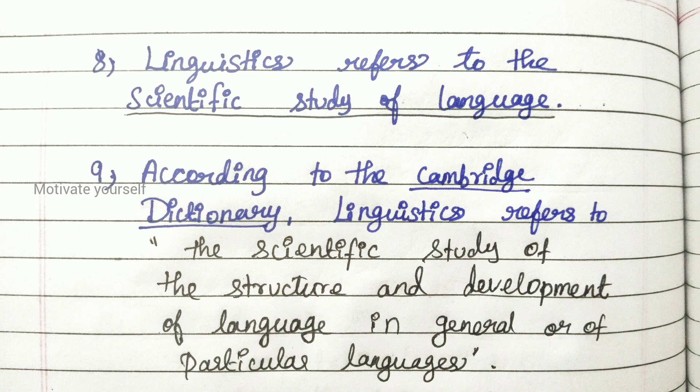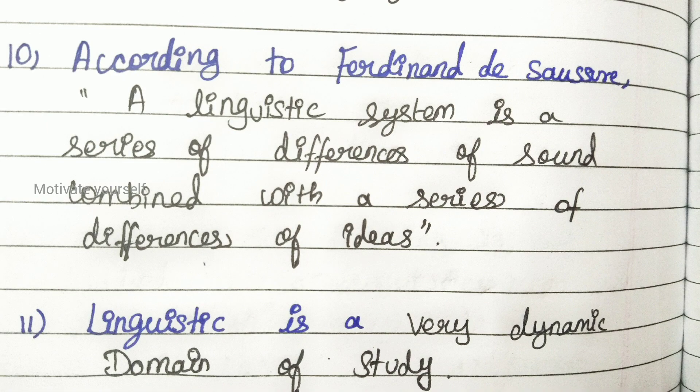Eighth question: linguistics refers to the scientific study of language. Ninth question: according to the Cambridge Dictionary, linguistics refers to the scientific study of the structure and development of language in general or of particular languages. Tenth question: according to Ferdinand de Saussure, a linguistic system is a series of differences of sound combined with a series of differences of ideas.